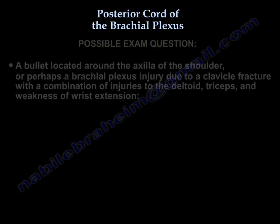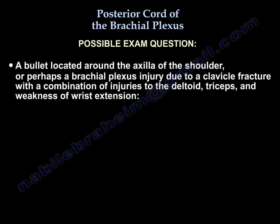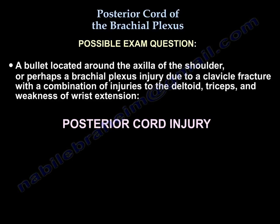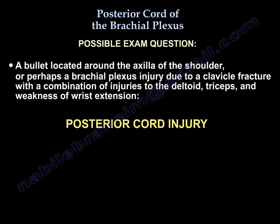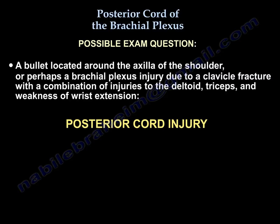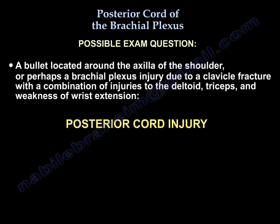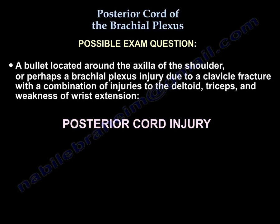A common exam question: if someone has a bullet wound around the axilla, or a brachial plexus injury from a clavicle fracture, it will probably be a posterior cord injury — especially if there is a combination of weakness of the deltoid muscle, the triceps muscle, and loss of wrist extension.